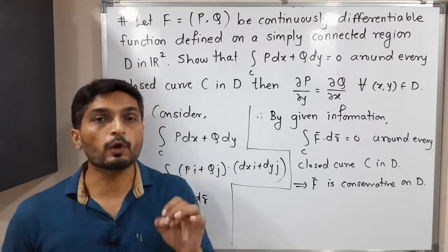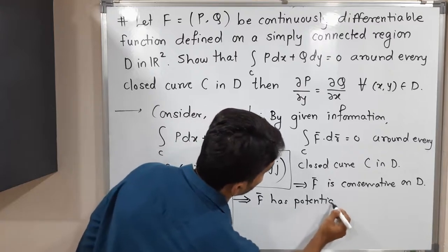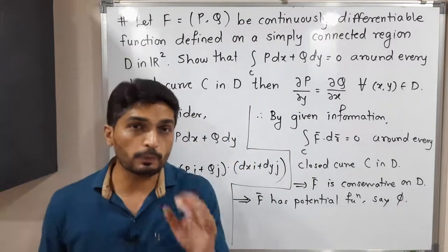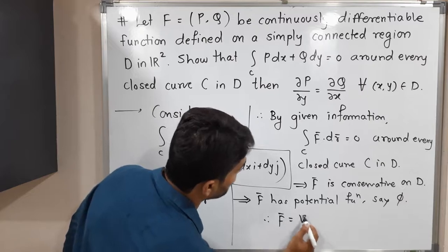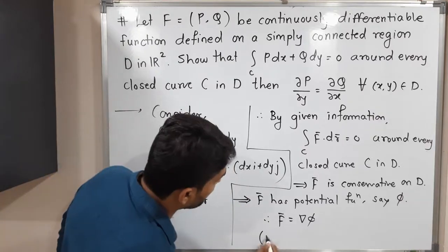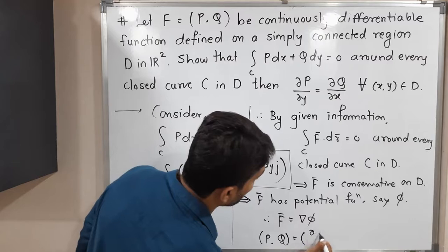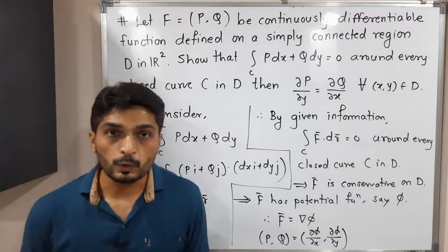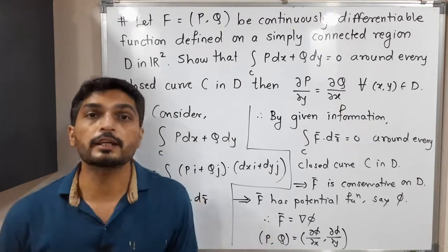Since the field is conservative, it definitely has some potential function, which we will call phi. So F-bar has a potential function phi. This means phi is a scalar field such that F-bar equals del phi. Putting the value of F-bar as (P, Q), and the del phi operator gives (∂φ/∂x, ∂φ/∂y). Equating components, P equals ∂φ/∂x and Q equals ∂φ/∂y.